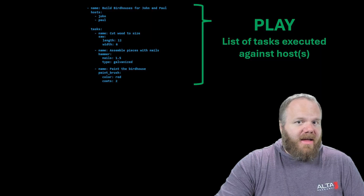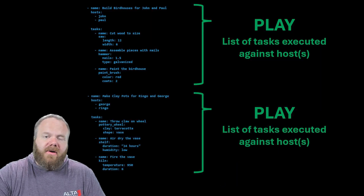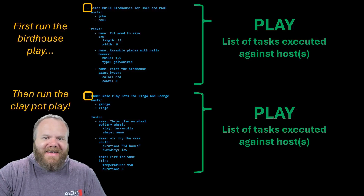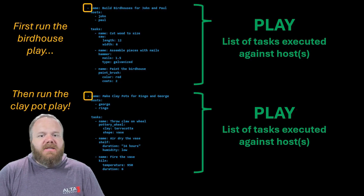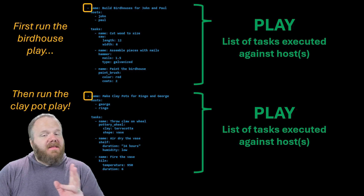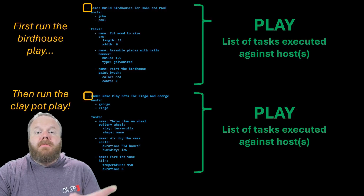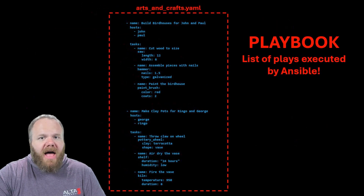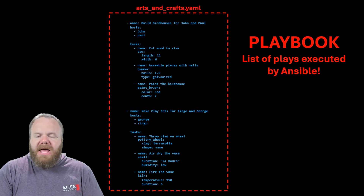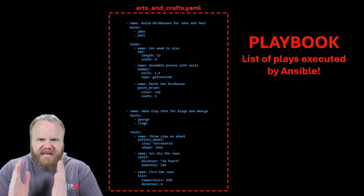But let's take another step back — that's just one play. You can put multiple plays together, chaining them one right after another. And do you notice what each and every one of those plays has in front of them? A dash, right? Which means if I was going to run these two plays, the first play goes first, and then the second play — making clay pots for George and Ringo — would run second. You can put multiple plays together inside of the same YAML file, and that's called an Ansible playbook. A playbook is just the catch-all term for the file that Ansible reads and executes.